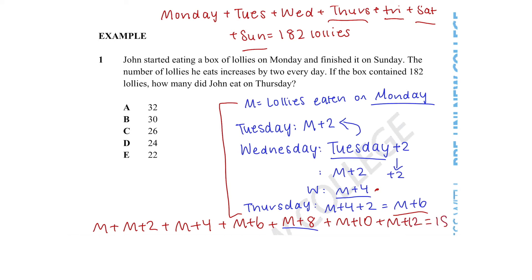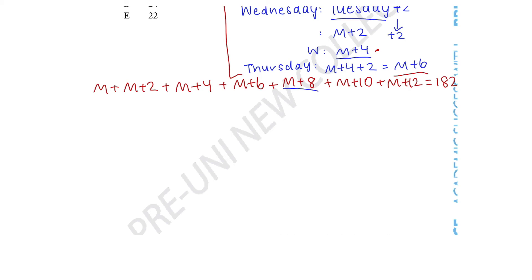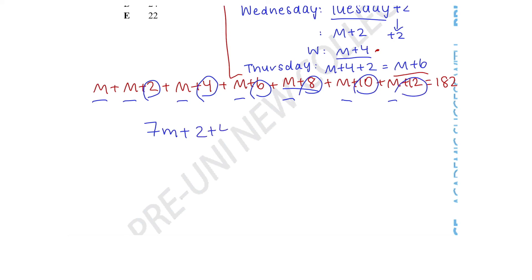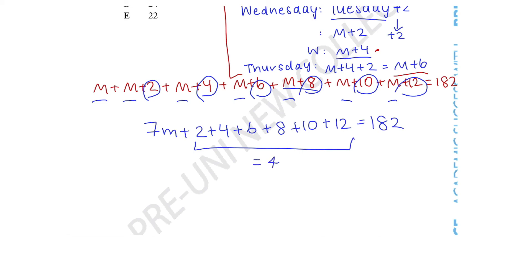These must total to 182 lollies. Looking at this equation, we can see there is only a single unknown, which is the letter m. We can bring all the m's together by summing them — there are 7 m's in total. Adding them all together we get 7m plus the constant values: 2 plus 4 plus 6 plus 8 plus 10 plus 12, which gives us 7m plus 42 equals 182.